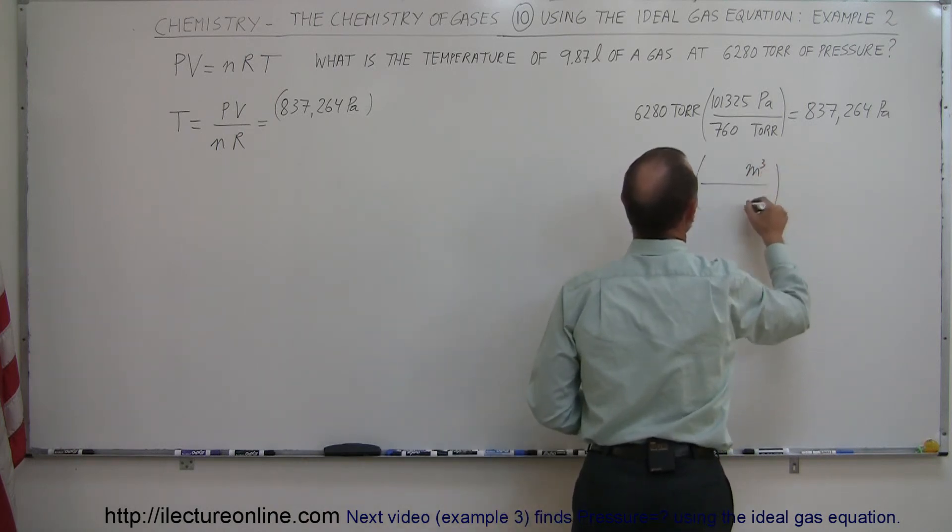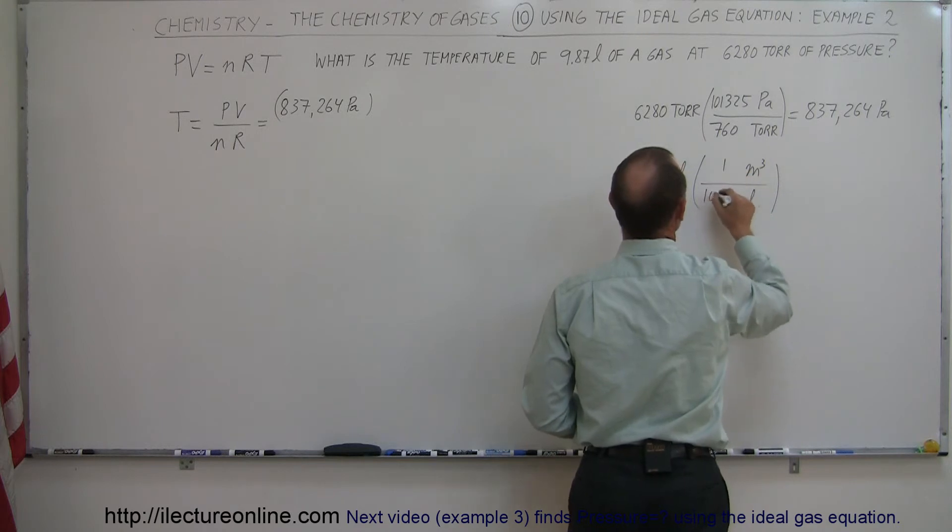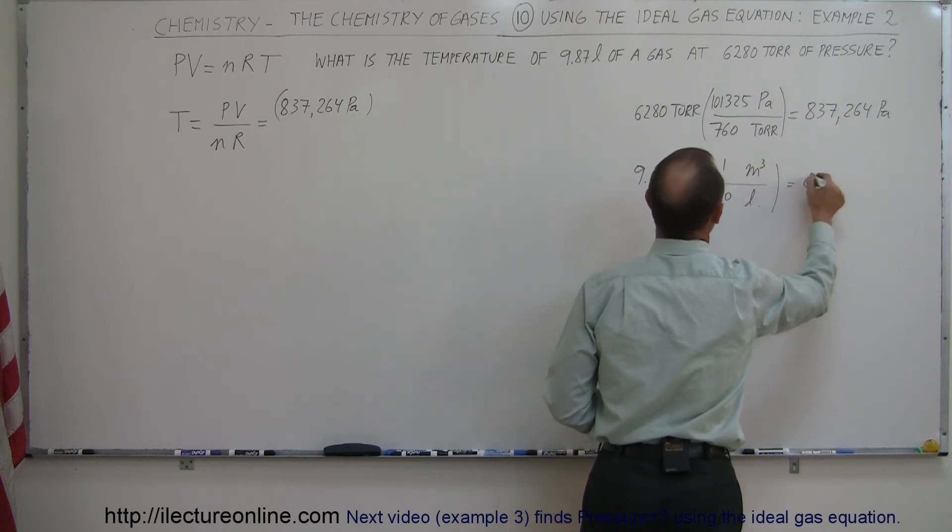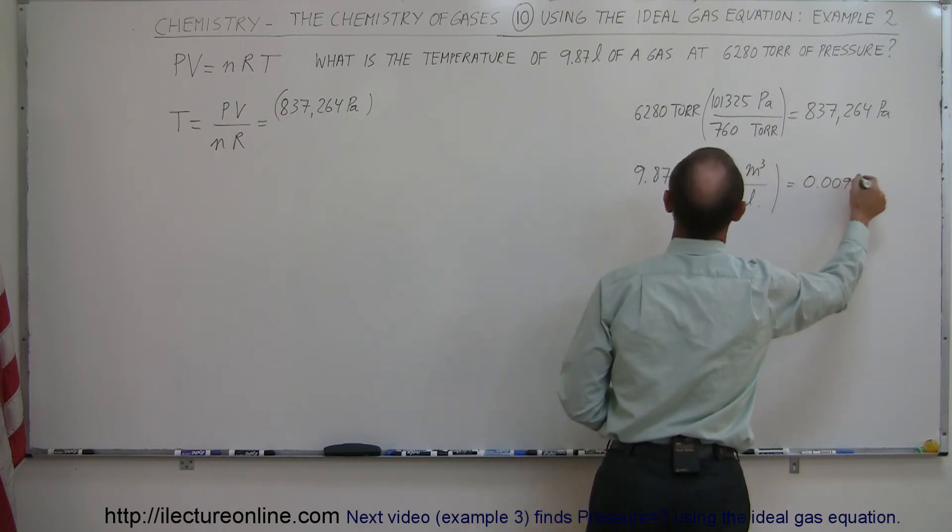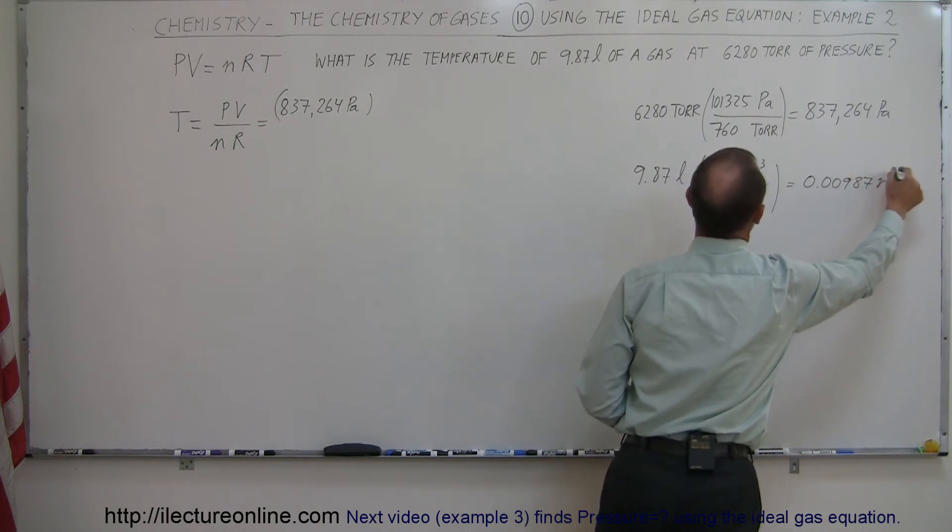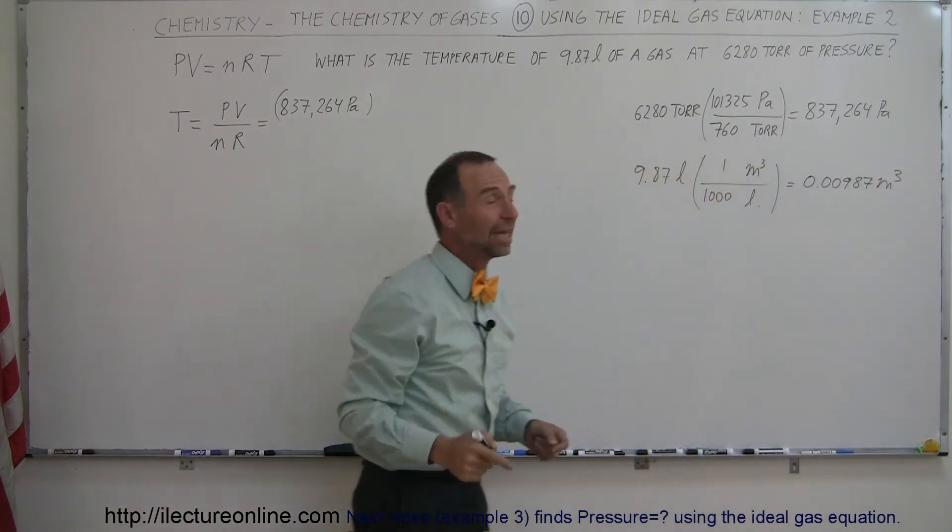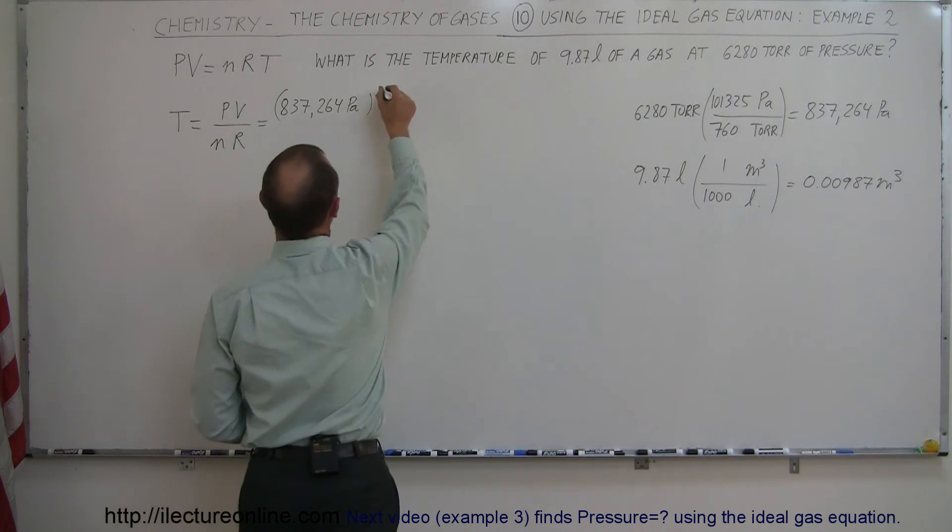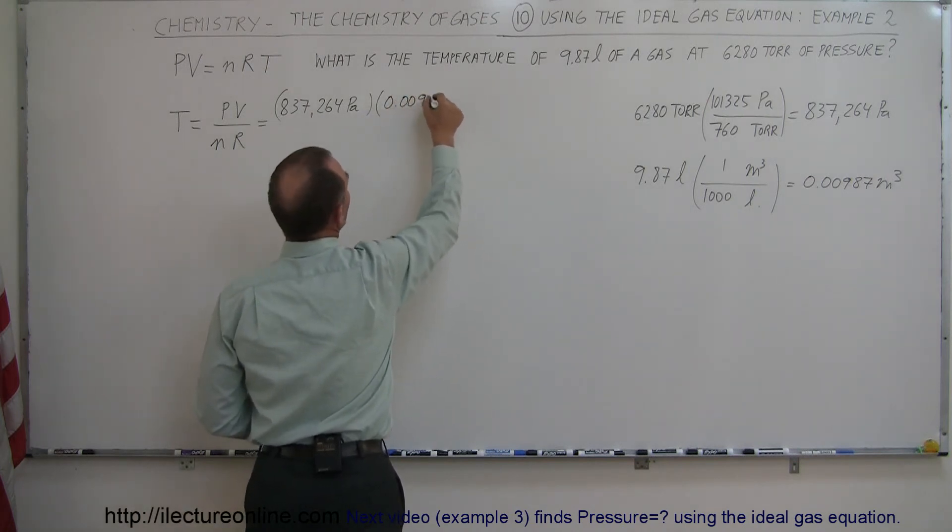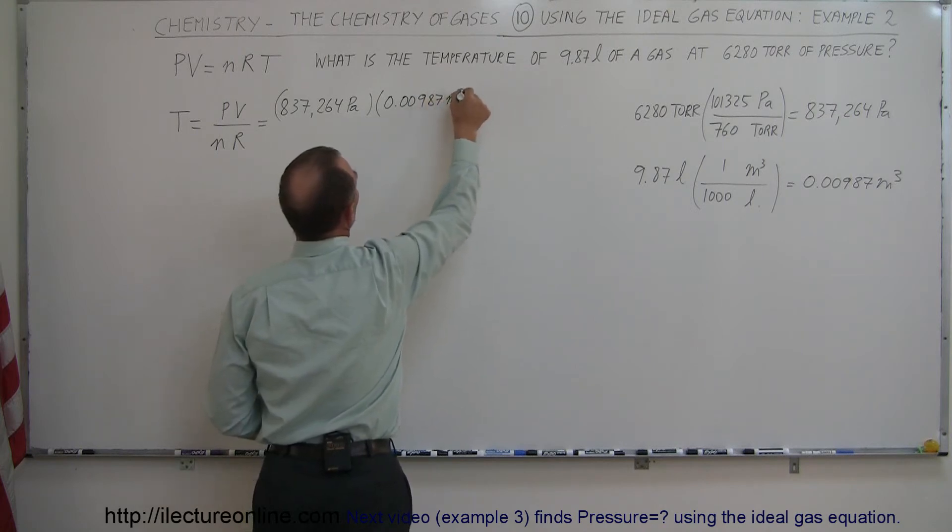The conversion factor, we need cubic meters on top, liters at the bottom. 1 cubic meter is 1,000 liters, so it would be 0.00987 meters cubed, and that's the number we need in our equation. So let's put that in here for volume, 0.00987 meters cubed.